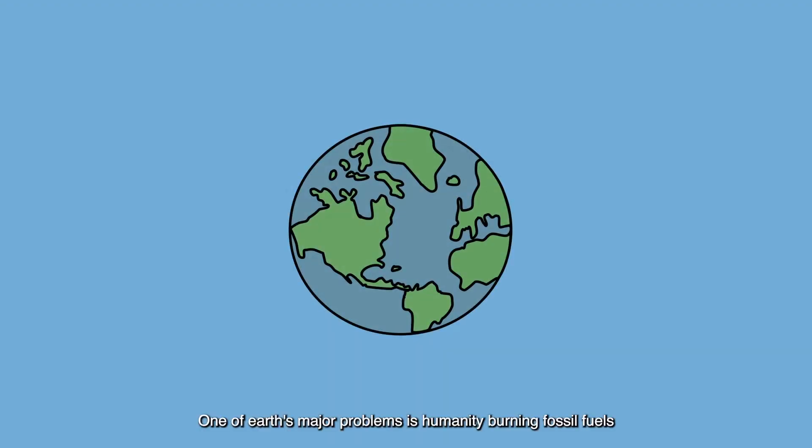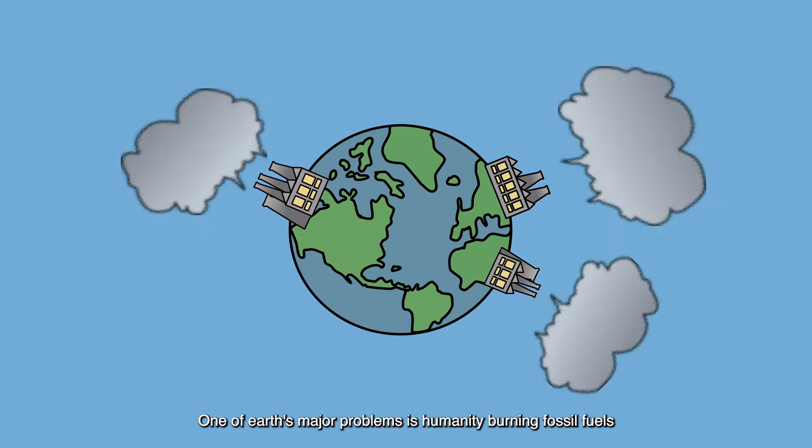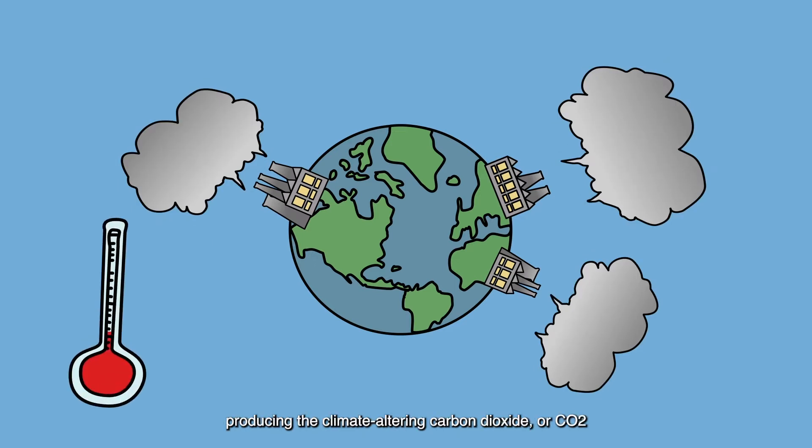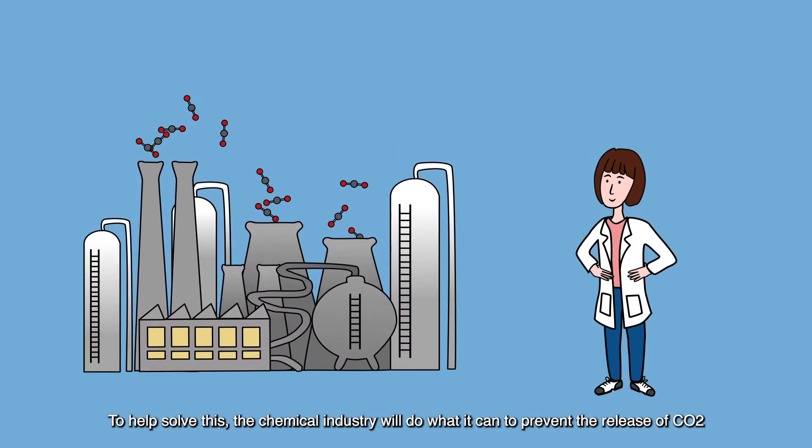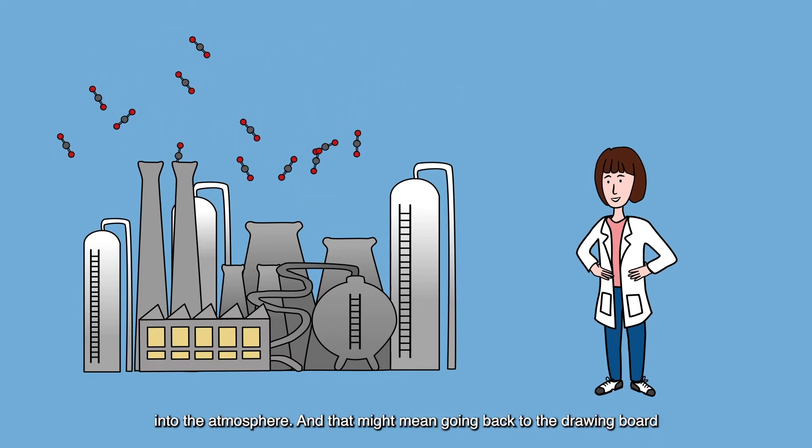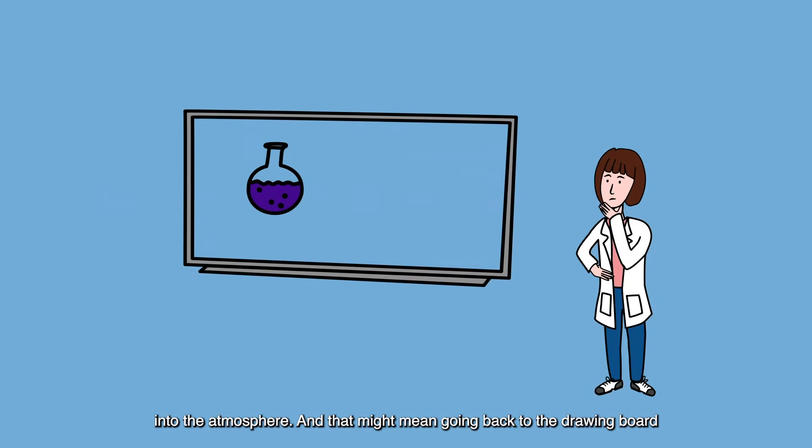One of Earth's major problems is humanity burning fossil fuels, producing the climate-altering carbon dioxide, or CO2. To help solve this, the chemical industry will do what it can to prevent the release of CO2 into the atmosphere. And that might mean going back to the drawing board to reinvent the basis of much of modern chemistry.